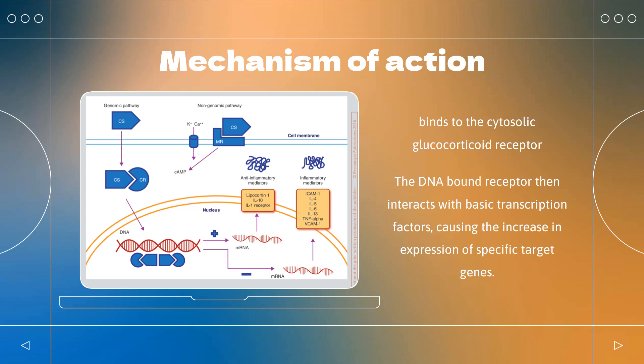Glucocorticoids also stimulate the lipocortin-1 escaping to the extracellular space, where it binds to the leukocyte membrane receptors and inhibits various inflammatory events: epithelial adhesion, emigration, chemotaxis, phagocytosis, respiratory burst, and release of various inflammatory mediators.